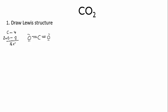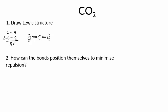So the question now is, how can the bonds position themselves so that they minimize repulsion? Note that for the purposes of VSEPR, we count each collection of bonding electrons as essentially a single bond.